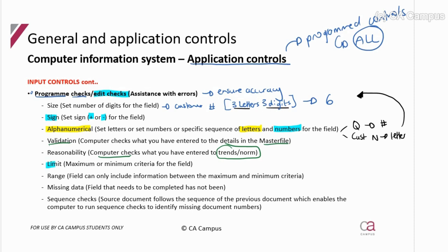A limit check involves a maximum or minimum criteria. If you're putting something in above the limit set for a customer, it shouldn't be allowed. Another example for limits: how much stock do you actually have on hand versus what the customer is trying to purchase — are they trying to purchase in excess of what's on hand? There's a limit: we can only sell what's on hand currently. Wherever you see a maximum or minimum criteria and something is trying to go over the maximum or under the minimum, that's a limit check.